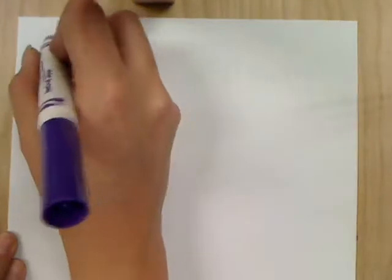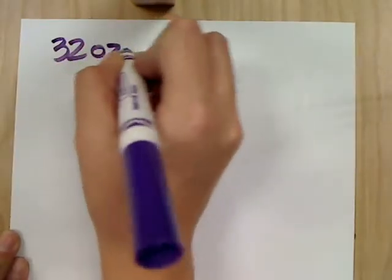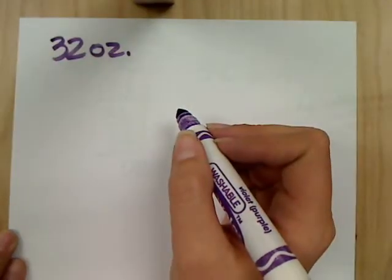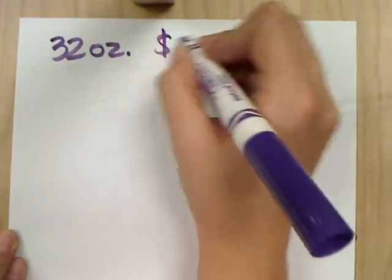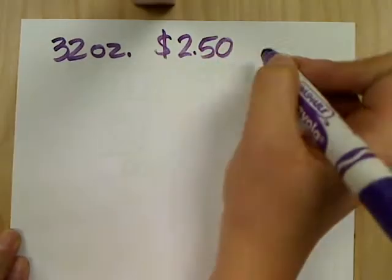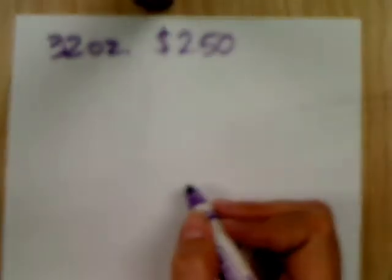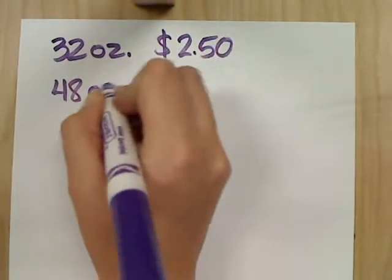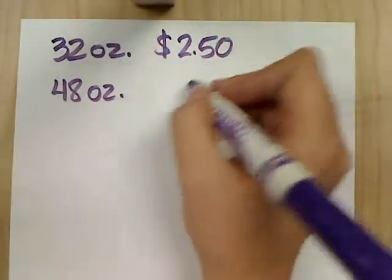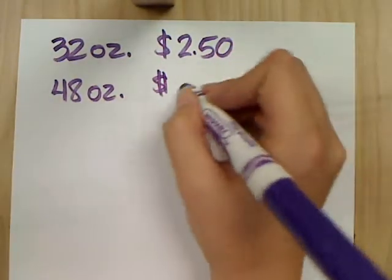Okay, we're buying apple juice, and it's 32 ounces. OZ is the abbreviation for ounce. 32 ounce bottle of apple juice for $2.50, and I'm comparing that to a 48 ounce bottle, and that costs $3.84.